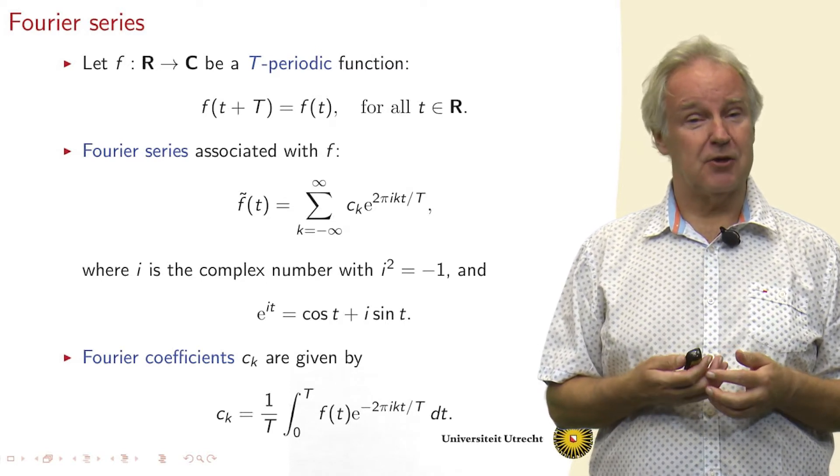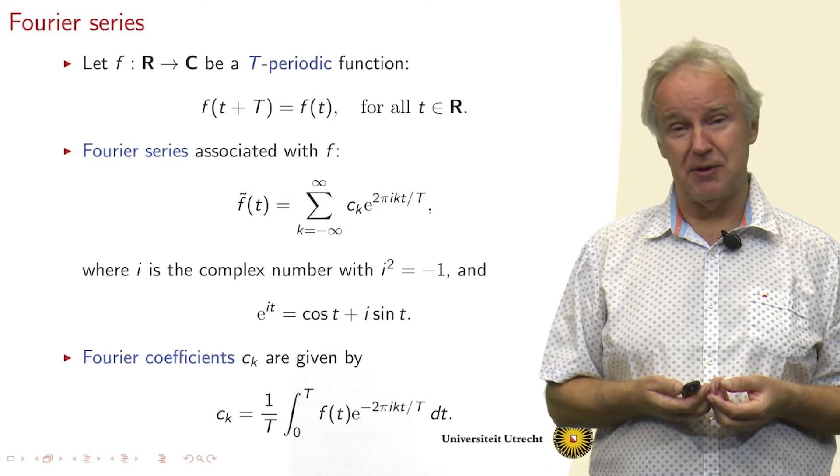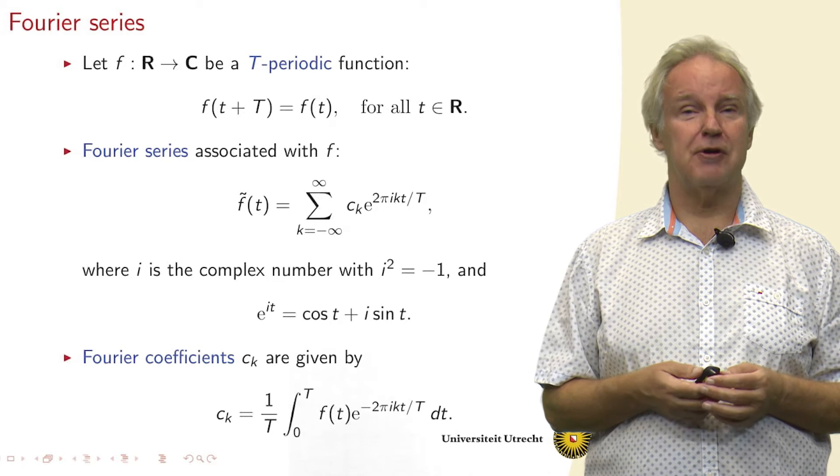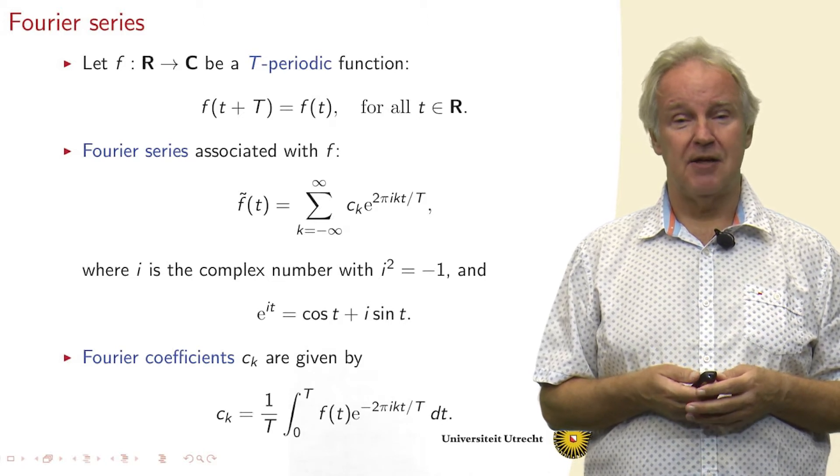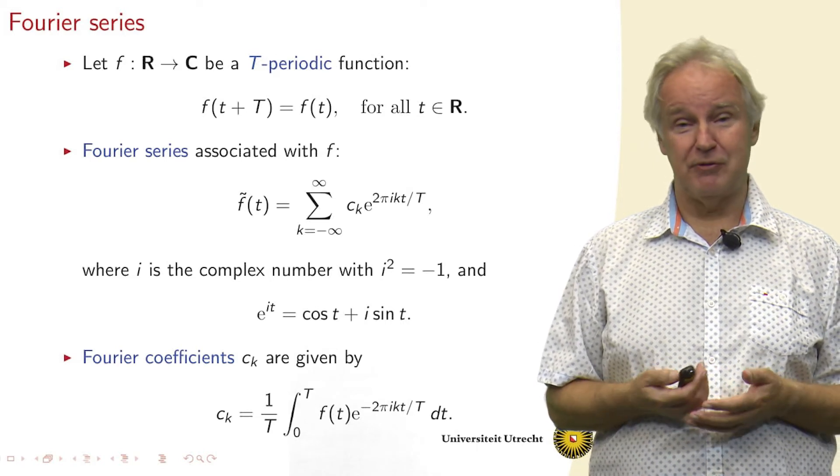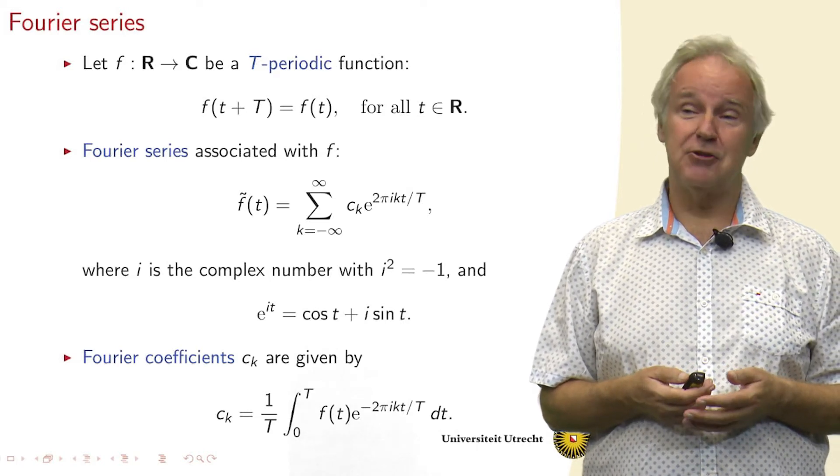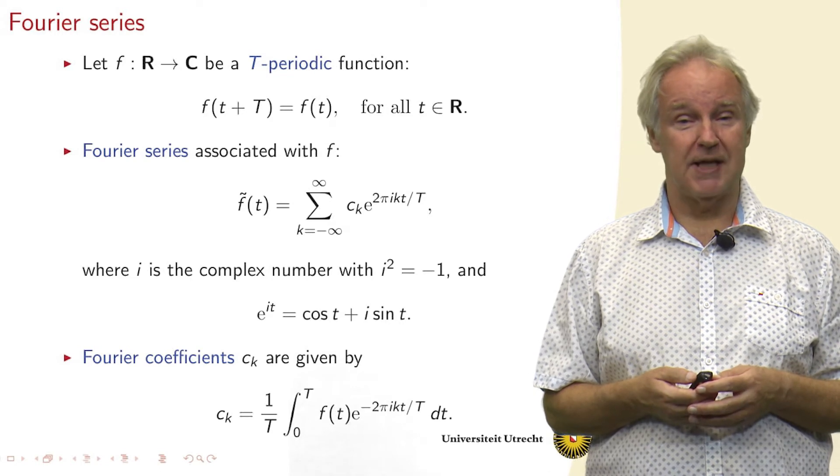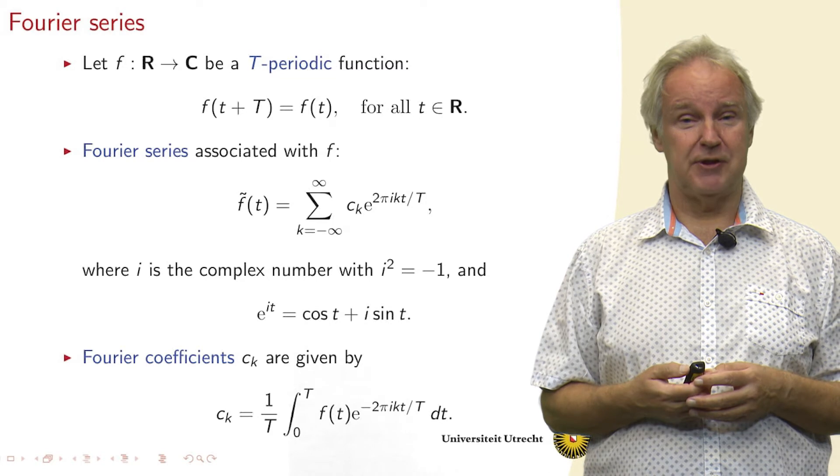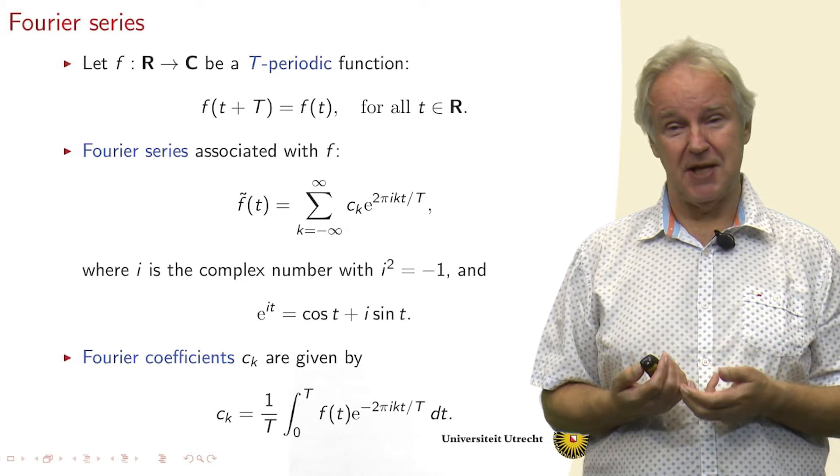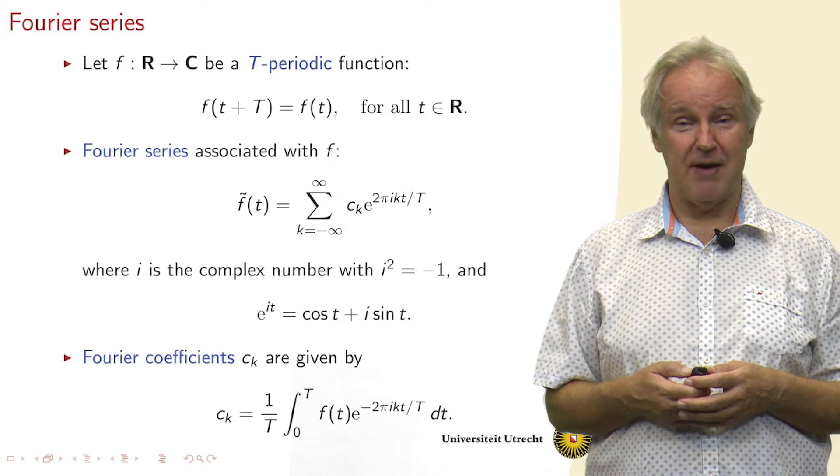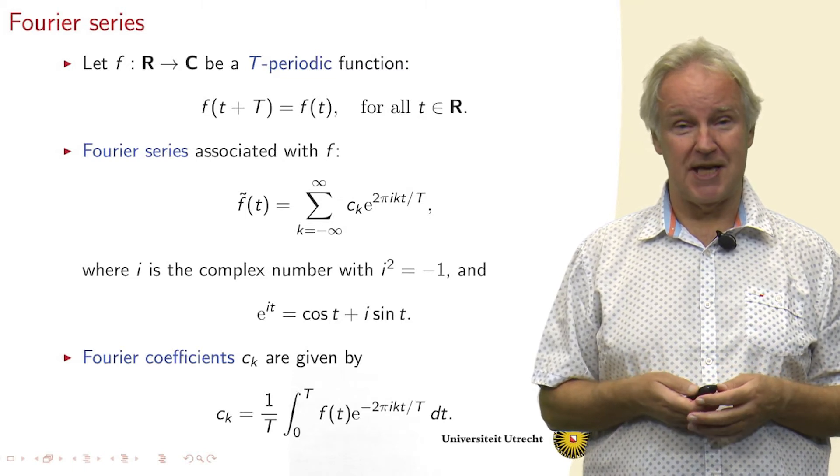Then we can compute, if the function is well-behaved smooth, we can compute the Fourier coefficients by taking 1 over the period times the integral over 1 period of the function value times e to the power minus 2 pi i kt divided by the period T. So that's the same exponent, except we have a minus sign instead of the plus sign in the series.